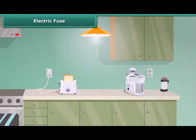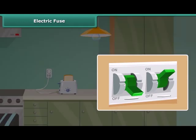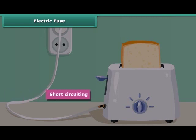Sometimes you may have seen the situation in your house that the fuse is blown off and the electric supply is cut off. This is because of the enormous amount of heat produced wherever there is an excess flow of current due to short circuiting, overloading, or insulation failures of appliances.